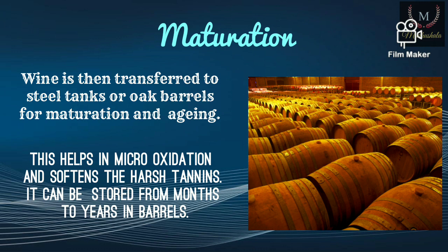The next step is maturation. Wine can be aged in stainless steel tanks or oak barrels. Maturation and aging helps in micro-oxidation, which softens the harsh tannins in the wines. Wines can be aged from months to decades depending on the quality of the wine. French oak or American oak barrels are used, which give a different flavor and aroma to the wine.